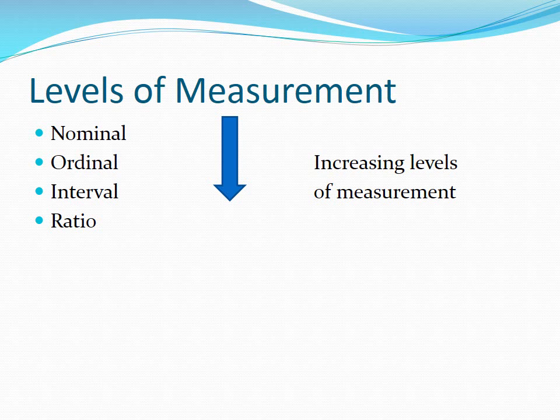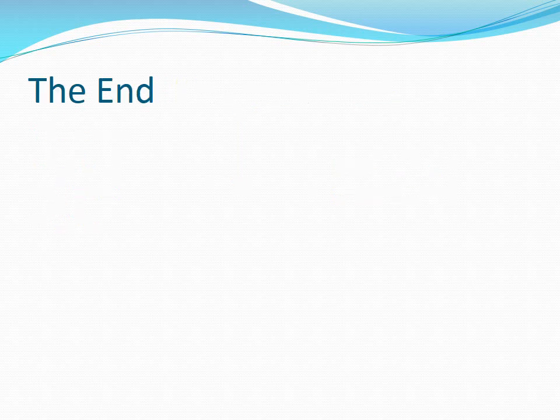With this final slide, we look at the levels of measurement ranked from the least to the most effective ways of measuring data: beginning with nominal, then ordinal, then interval, then ratio. This concludes the presentation of levels of measurement as it applies to descriptive statistics.